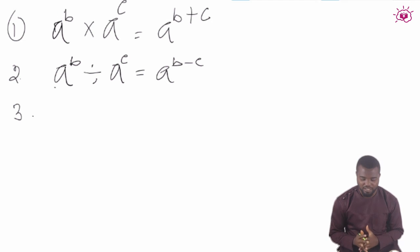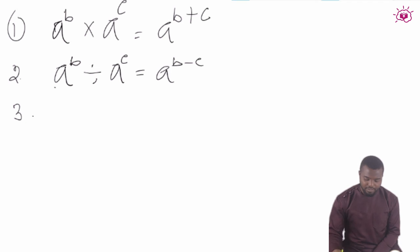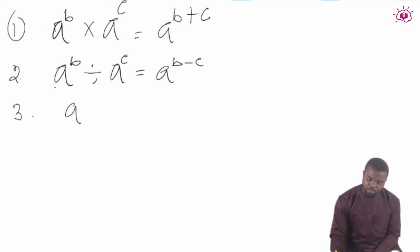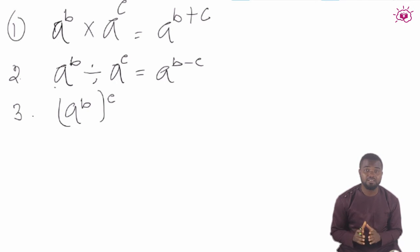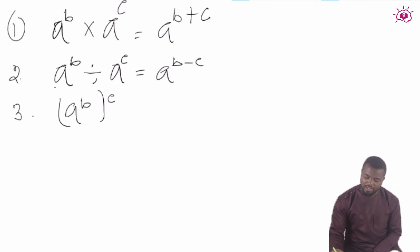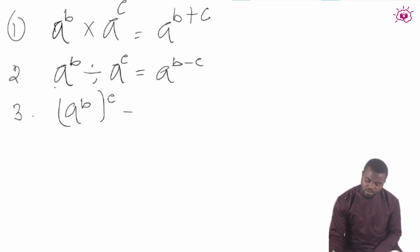The third law is numbers with double powers. That means when we have a raised to the power b, all raised to the power c, a has two powers — b and c. In this case, you just multiply the powers, so that would yield a raised to the power b times c.